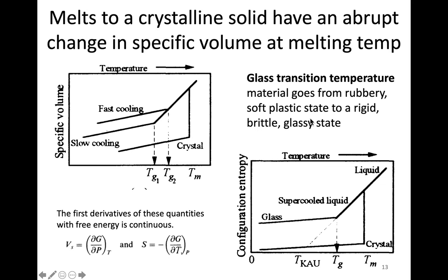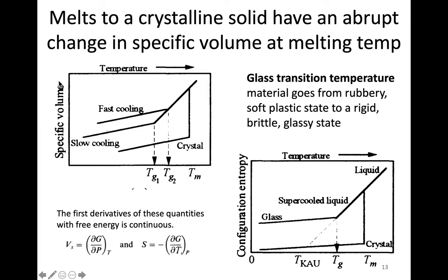What we're going to look at now is the transition in a silicate from a liquid or liquid-like state to a solid state. We know that transition from liquid to solid in a crystalline material is liquid to crystalline solid. However, in amorphous materials something different happens. To look at this, I'm going to look at specific volume, which is basically just volume divided by mass — the inverse of density, or normalized volume. What we're looking at here is volume as a function of temperature.